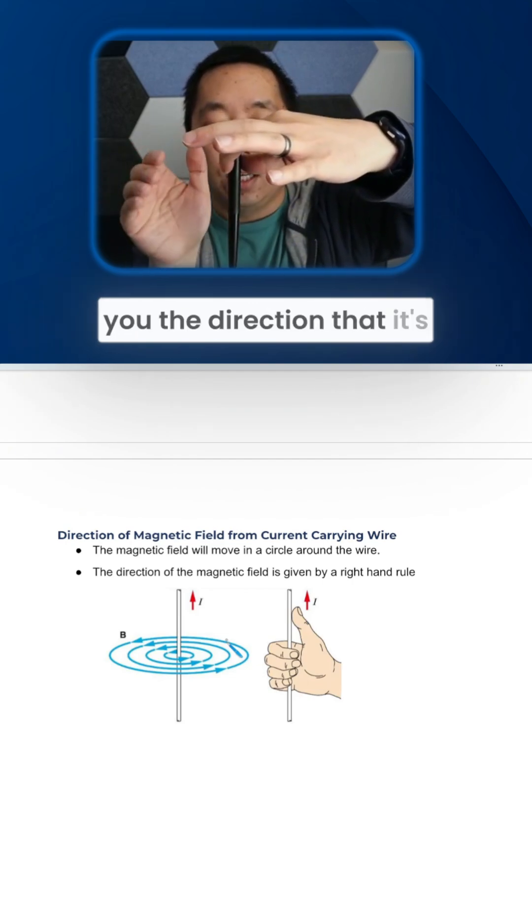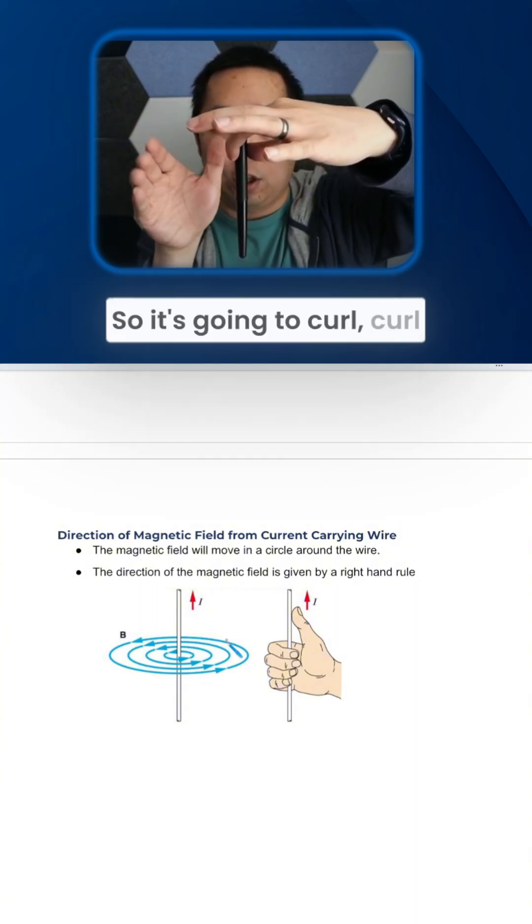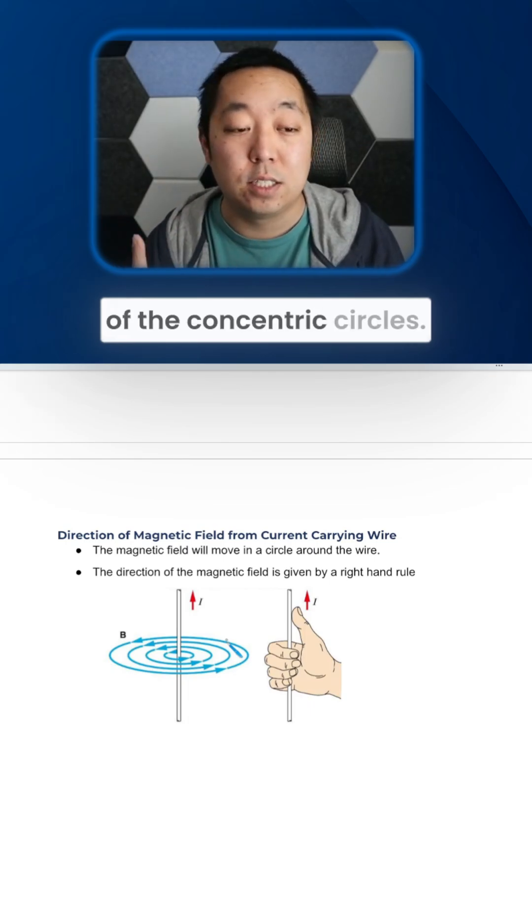So they're just telling you the direction that it's going to curl in there, in that portion there, right? So it's going to curl around in that direction. And that's the direction of the concentric circles.